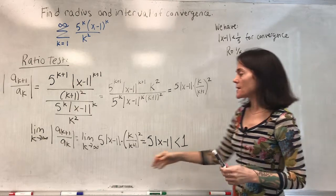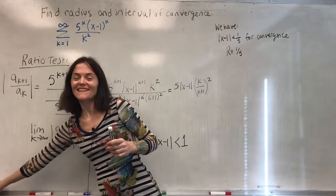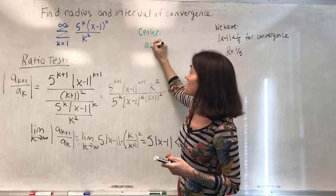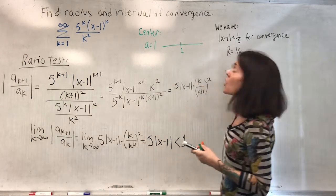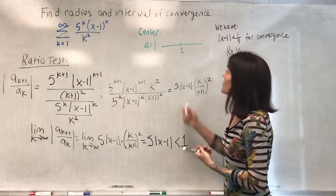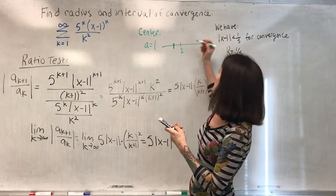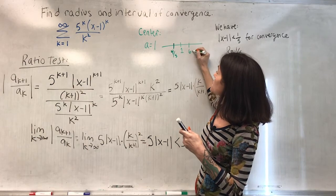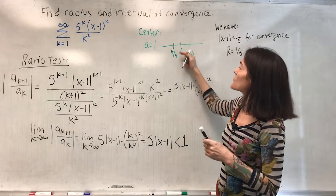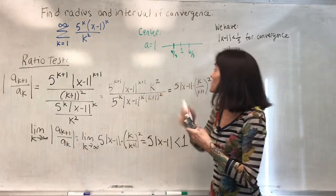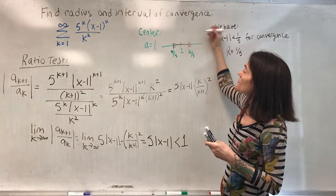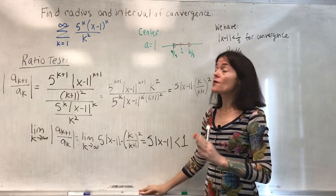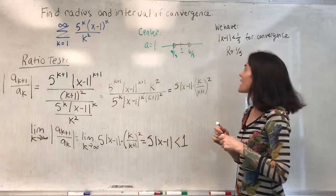The center of this power series is 1. Once we know R = 1/5, the interval extends 1/5 in each direction from 1, going to 4/5 and 6/5. We know the power series converges on the open interval (4/5, 6/5), and it diverges outside this interval. What remains is to test the endpoints, because we don't yet know whether to include 4/5 or 6/5.